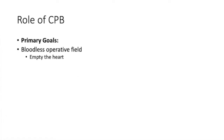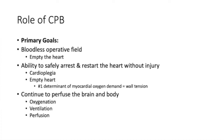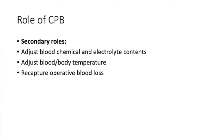The primary goals of cardiopulmonary bypass are: number one, a bloodless operative field by emptying the heart. You want the ability to safely arrest and restart the heart without injury, which comes from cardioplegia but also from keeping the heart empty and decompressed — since the number one determinant of myocardial oxygen demand is wall tension. The pump must also perfuse the brain and body, handling oxygenation and ventilation. Secondary goals include adjusting chemical and electrolyte components of blood, adjusting body temperature, and recapturing operative blood loss.